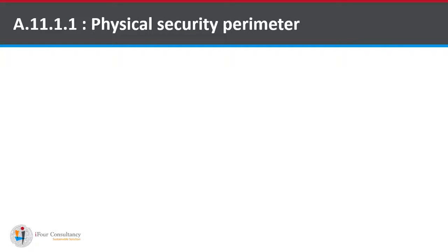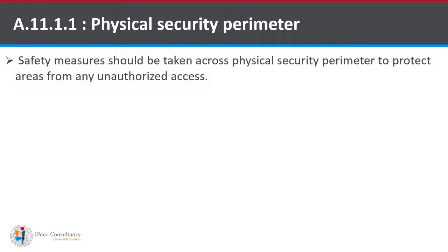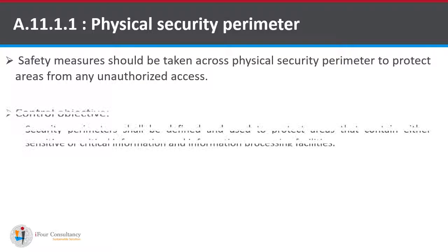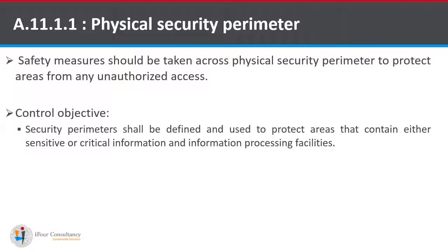Now we are going to discuss sub-control A.11.1.1, Physical Security Perimeter. Safety measures should be taken across the physical security perimeter to protect areas from any unauthorized access, such as Data Centers. The control objective of this sub-control is that security perimeters shall be defined and used to protect areas that contain sensitive or critical information and information processing facilities — for example, a Data Center.